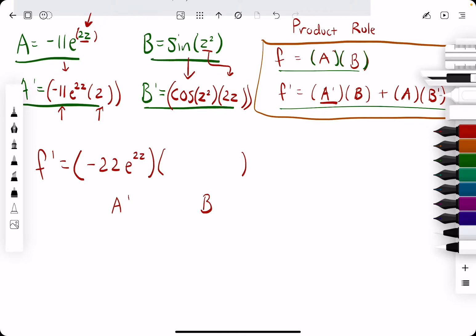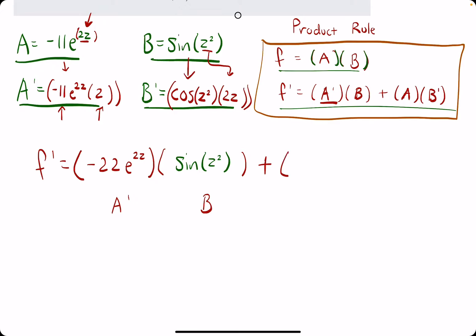Now, we want B. Well, B was our sine of Z squared. Got distracted. And then, we have A plus.